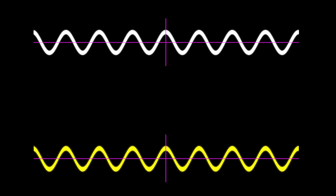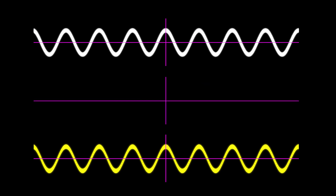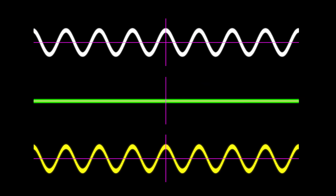Before we talk about instruments, we'll have a look at waves and harmonics. Here we have a fundamental sinusoid on the top, a second sinusoid on the bottom, with a third sinusoid in the middle which currently has an amplitude of zero. The bottom sinusoid is the sum of the top and the middle, in this case resulting in a copy of the top sinusoid.